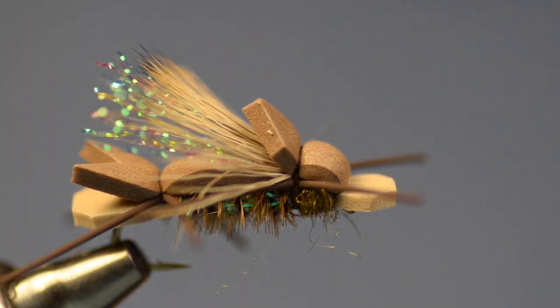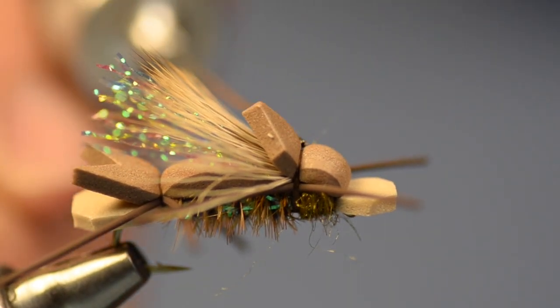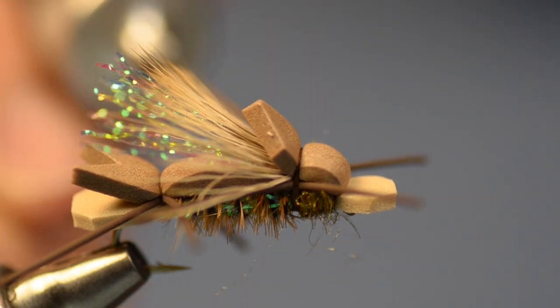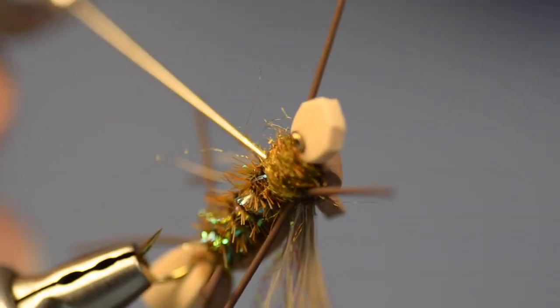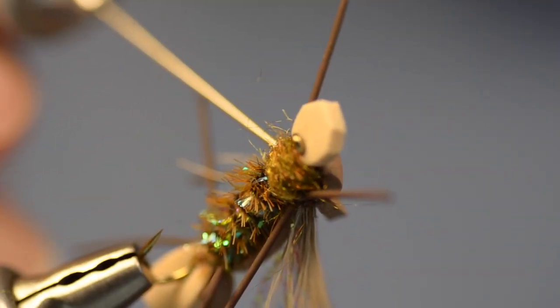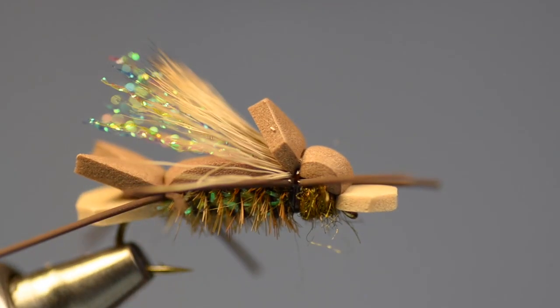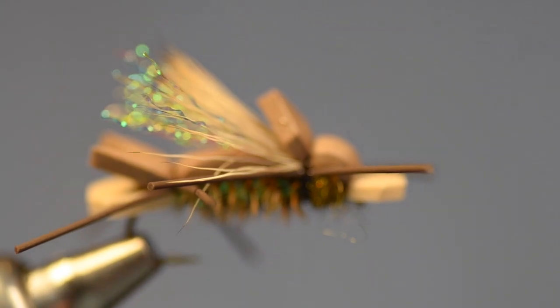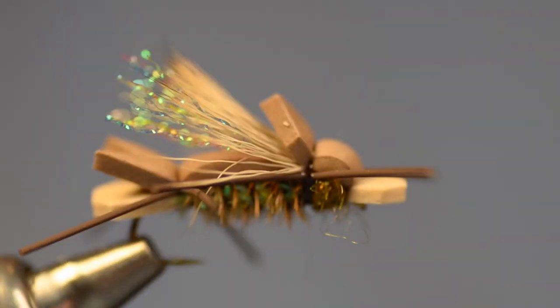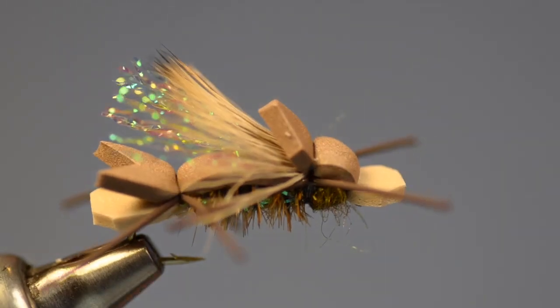Now it's not a bad idea to add a little shot of head cement because we did tie that thread off over the top of that foam. So I'm going to run just a small bead of head cement down the thread wraps all the way around. Let that bleed in. And that's our finished Amy's Ant.